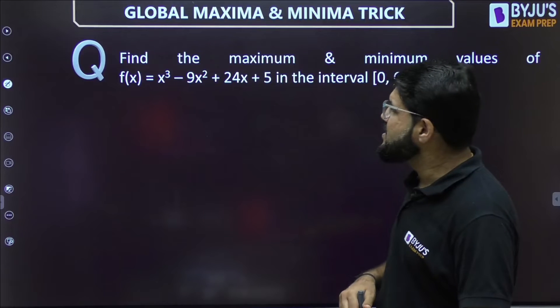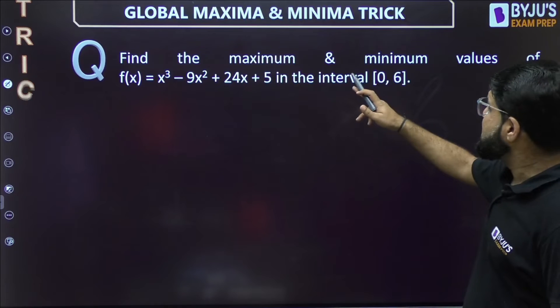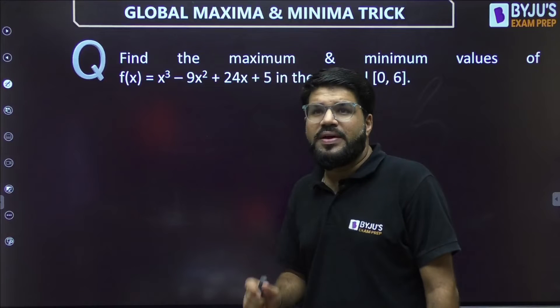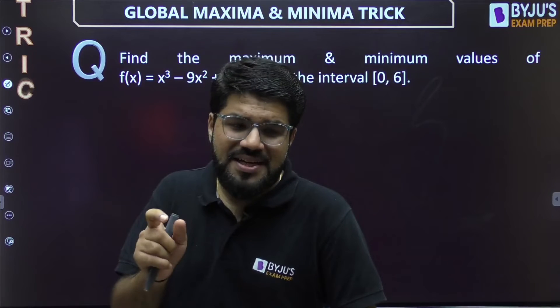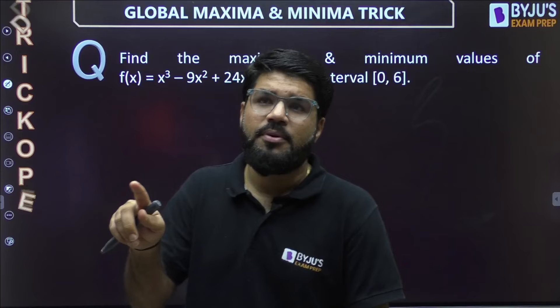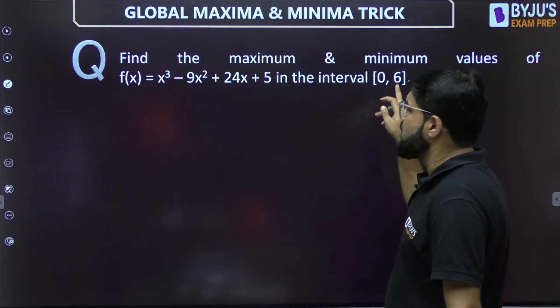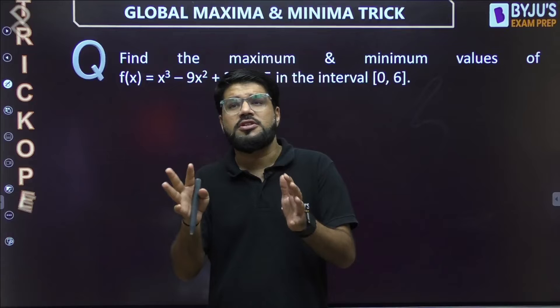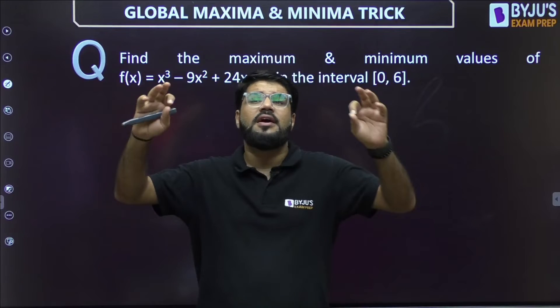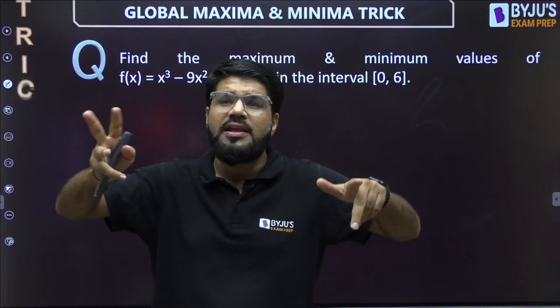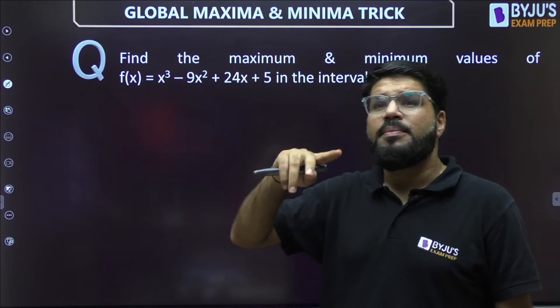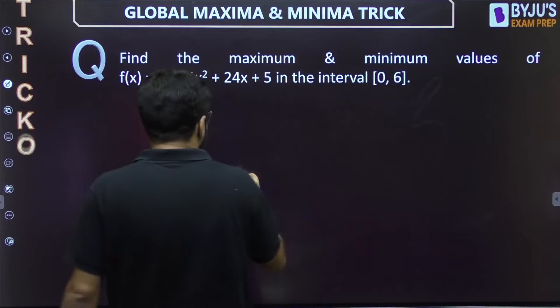So here is the question for you. Find the maximum and minimum values of f(x) in the given interval. So when I say maximum and minimum, it doesn't mean here local maxima local minima, because there is a closed interval 0,6 given to you. When I say maximum minima in an interval, that of course means global maxima and minima—the overall largest possible value and the smallest possible value in the given interval. Sometimes that may be local maxima also, because it is quite possible.